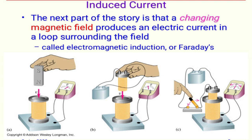The next part of the story is that a changing magnetic field produces an electric current in a loop surrounding the field. This is called electromagnetic induction, which was described by Faraday.